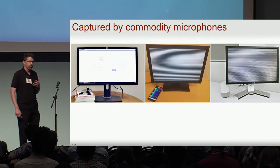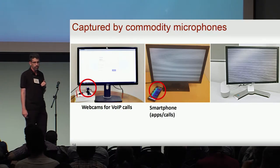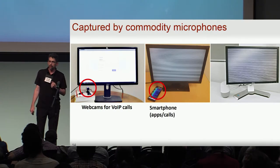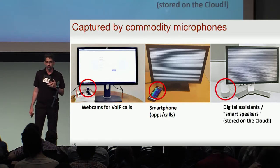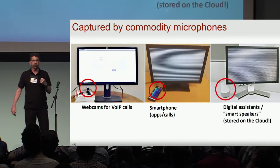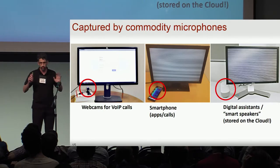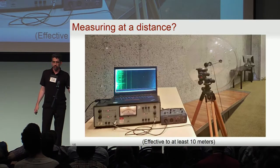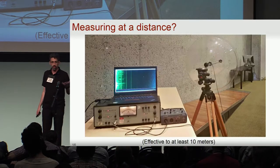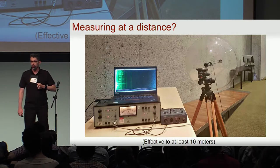You can observe this leakage on LED and LCD screens from many manufacturers and different models, including old ones as well as fresh ones from Amazon. You can record this using many commodity microphones, such as webcams or the Intel microphones built into many screens and phones. And to jump on the Internet of Things bandwagon, even your favorite digital assistant smart speaker — that would also conveniently store the captured audio on the cloud for future reference. You can even measure these signals from afar, say 10 meters away, using a parabolic dish, and get the same signals.